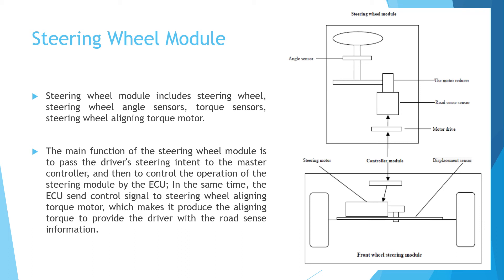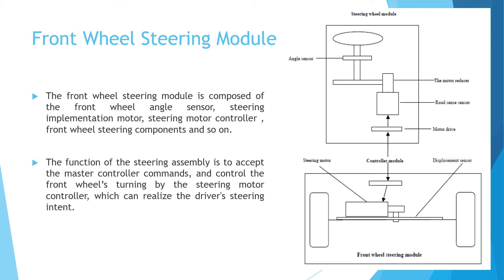Next is the front wheel steering module. The front wheel steering module is composed of the front wheel angle sensor, steering implementation motor, steering motor controller, and front wheel steering components. The function of the steering assembly is to accept the master control commands and control the front wheels' turning by the steering motor controller, which can realize the driver's steering intent.